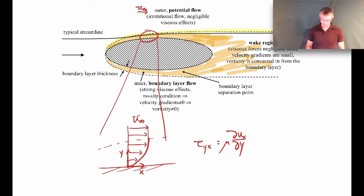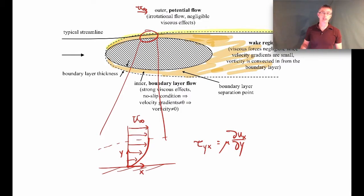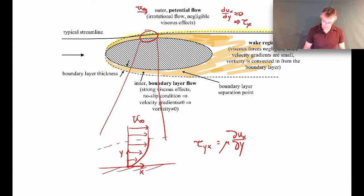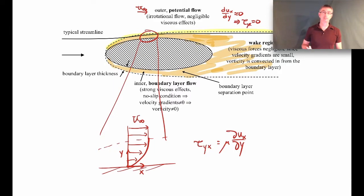Outside the boundary layer in the outer flow, du_x/dy is essentially zero — the velocity doesn't change much as you move further away from the boundary. So the shear stress τ_yx is approximately zero out there. All shear stress effects are concentrated inside the boundary layer region, which can be very thin. For high-speed flow past a 747 wing at over 500 miles per hour, the boundary layer thickness is on the order of maybe one inch.